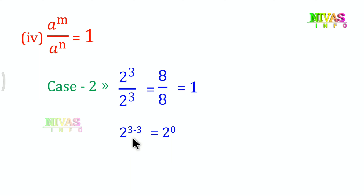When the bases cancel and exponents are equal, the result is 1. If the exponent is zero, the value is 1.